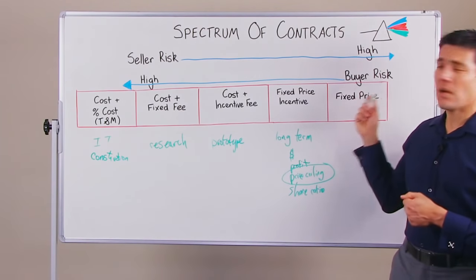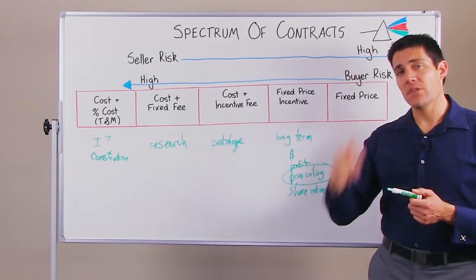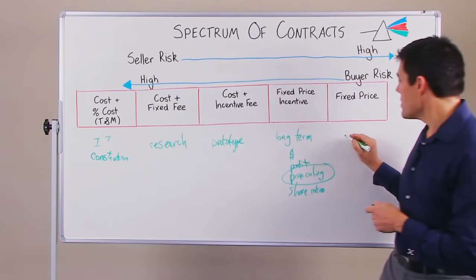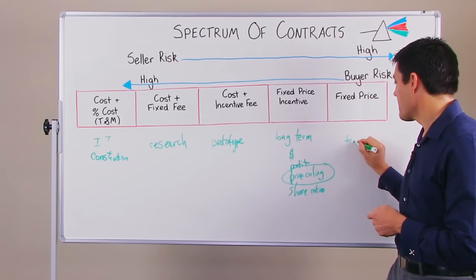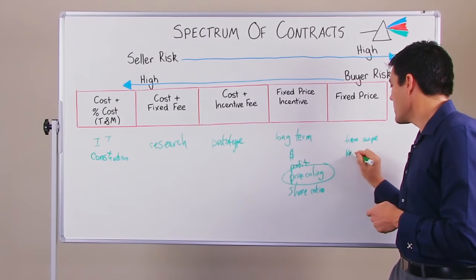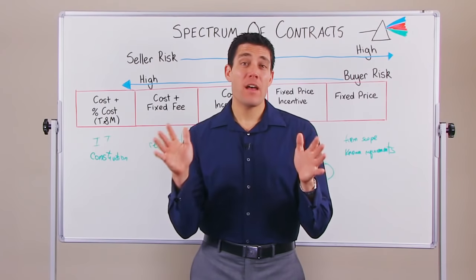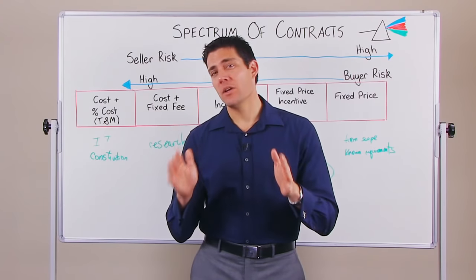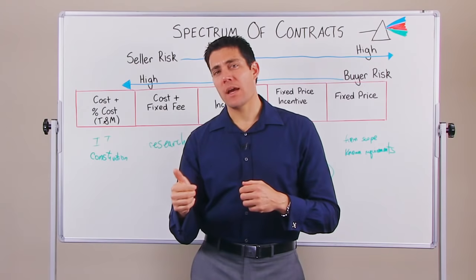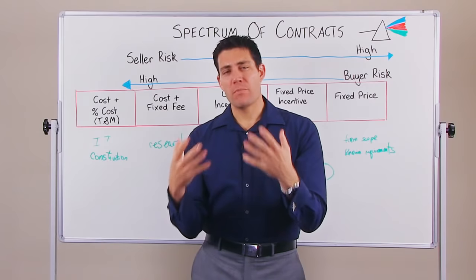As a buyer, this is your lowest risk type of commercial vehicle, and as a seller, it's your highest risk — you need to make sure you've done these types of projects before and know exactly what the client wants. These are good for when you have a firm scope and known requirements. You've got five basic types of contracts to appropriately match the project you need to deliver, and it's really important to choose the right contract to shape the commercial behaviors of both buyer and seller.